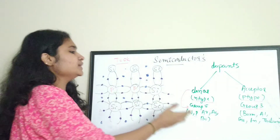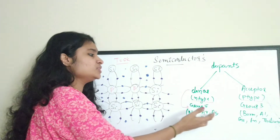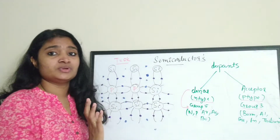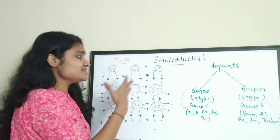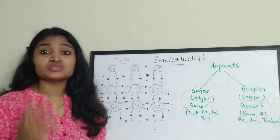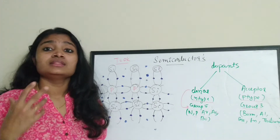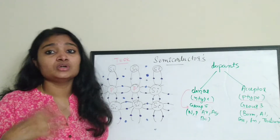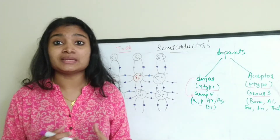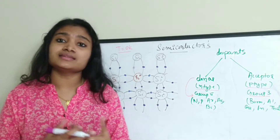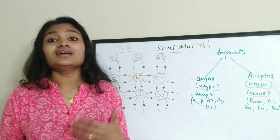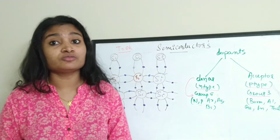Whether you dope with nitrogen, phosphorus, arsenic, antimony, or bismuth — all are donor impurities, N-type impurities, or Group 5 impurities. The resulting N-type semiconductor has a large number of free electrons donated by the donor impurity. N-type extrinsic semiconductors are generated by doping intrinsic silicon with donor impurities or Group 5 elements.